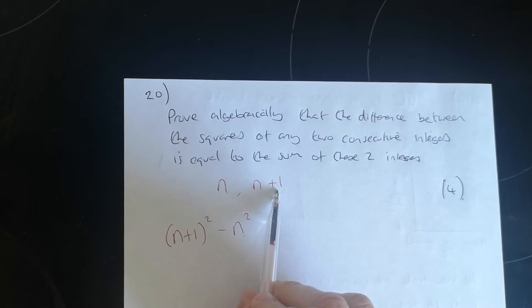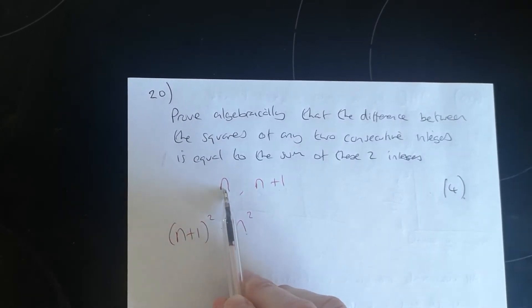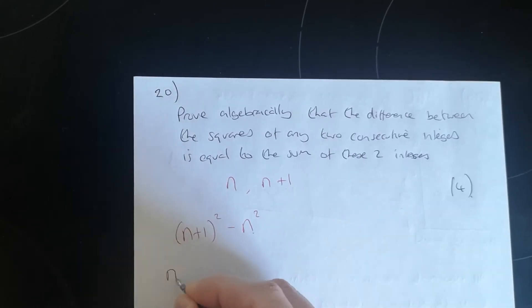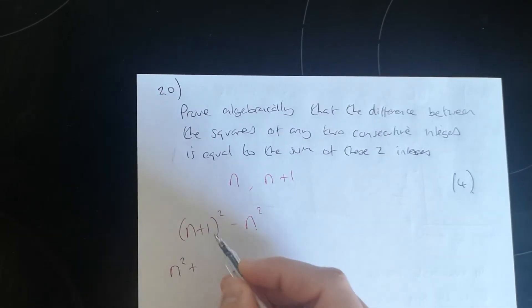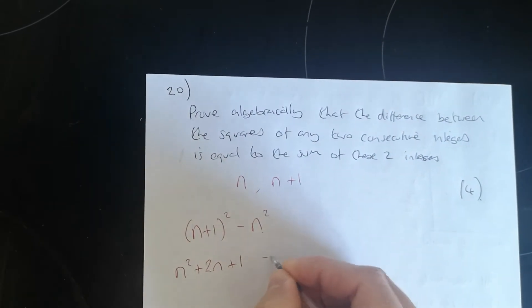So n plus 1 is obviously the larger number. Square it, take away the smaller number squared, smaller integer. So you end up, expand that, you get n squared plus 2n plus 1 minus n squared.